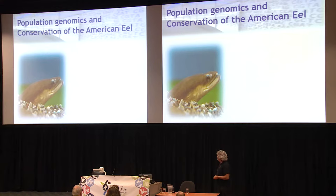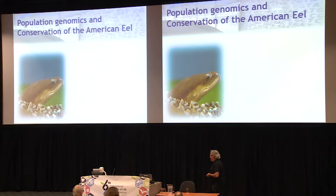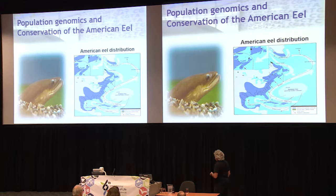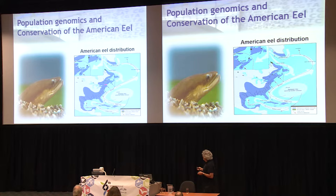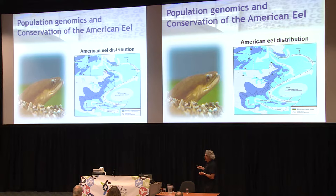The case study I chose is work we've been doing on the population genomics and conservation of the American eel, which has been a real puzzle in terms of management and conservation. When it comes to the life cycle and distribution of eel, both European and American eels spawn right in the middle of the ocean in the Sargasso Sea, and then larvae disperse through the Gulf Stream — first passively and eventually actively approaching the coast. Eels may decide to enter freshwater and spend their life there before going back to the Sargasso Sea, or they may spend their entire life in coastal and brackish areas. They can do that from Mexico all the way to Northern Labrador.